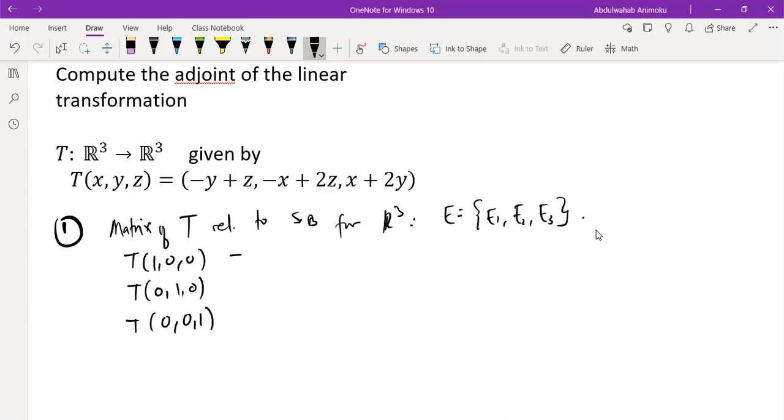So these are the things that we need to calculate. Now, T of (1, 0, 0) means that X is 1, Y is 0, Z is 0, which means the first component is 0, second component is minus 1, and the third component is 1.